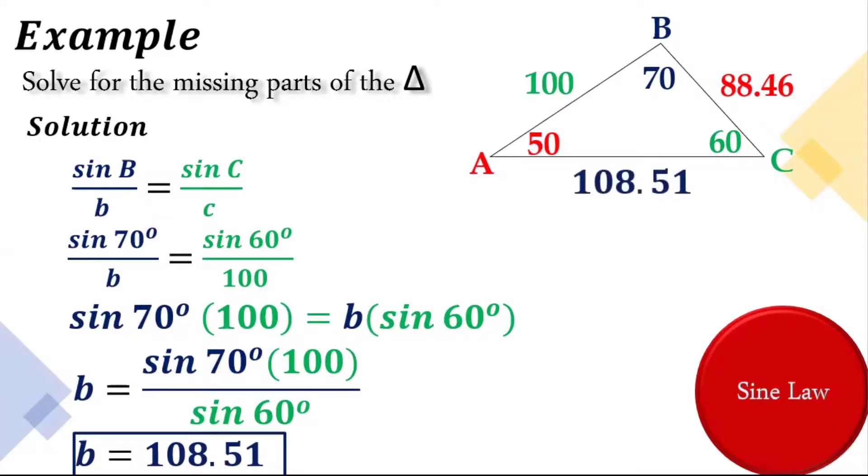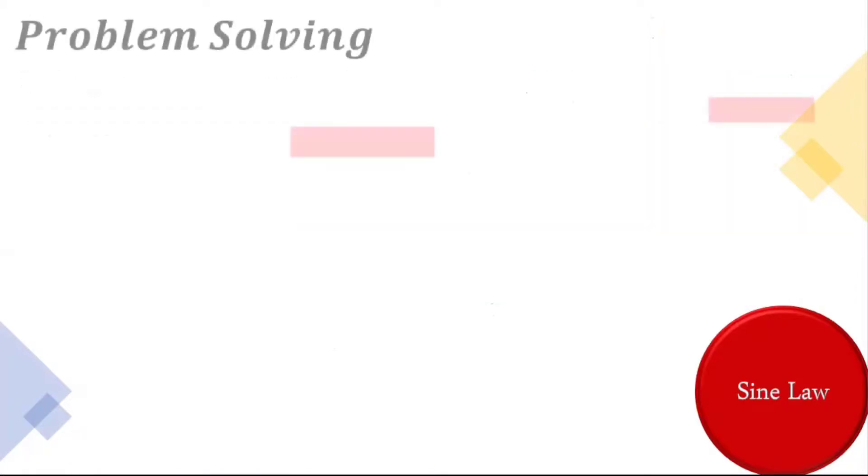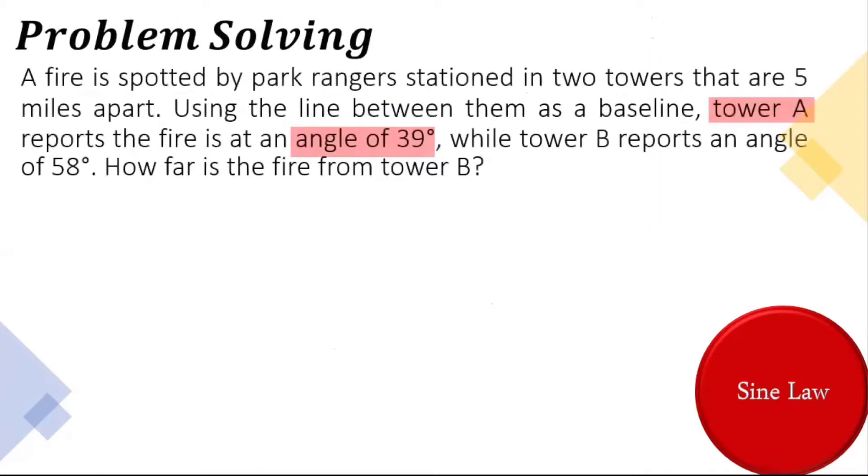Let's have another example using problem solving. And here's our problem. A fire is spotted by park rangers stationed in two towers that are five miles apart. Using the line between them as a baseline, Tower A reports the fire is at an angle of 39 degrees, while Tower B reports an angle of 58 degrees. How far is the fire from Tower B?